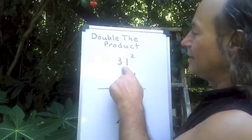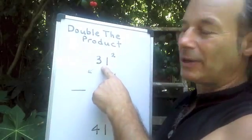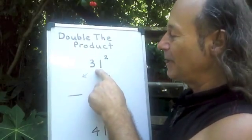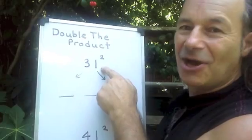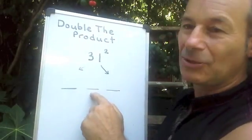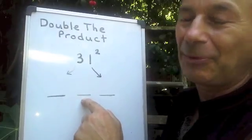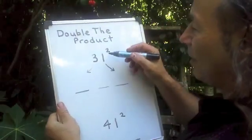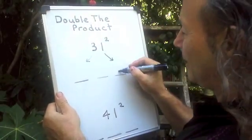We're going to multiply the left-hand side, we're going to multiply the right-hand side, but we're going to do something in the middle to get the middle digit called double the product. When we multiply the right-hand side, 1 squared is 1.